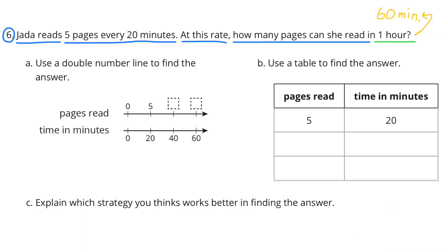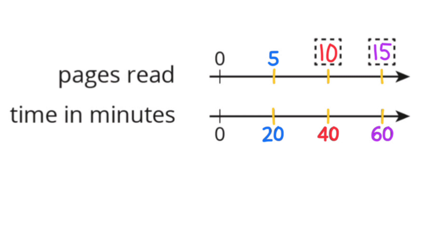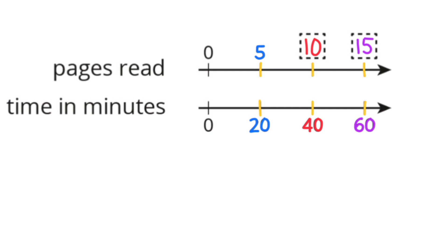Number 6: Jada reads 5 pages every 20 minutes. At this rate, how many pages can she read in 1 hour? We know 1 hour is 60 minutes. Part a: Use a double number line to find the answer. The time in minutes goes 20, 40, 60 — counting by 20s. On the pages read side, we count by 5s: 5, 10, 15.